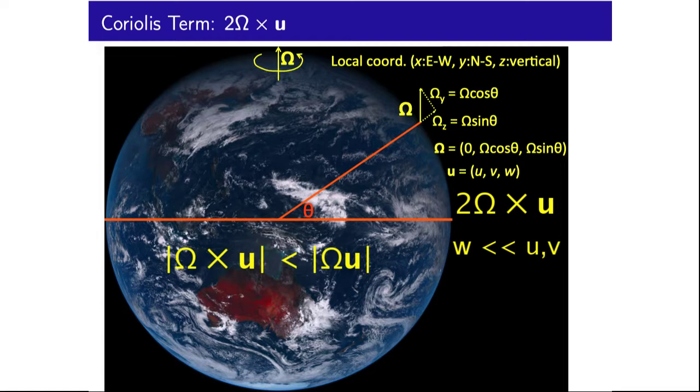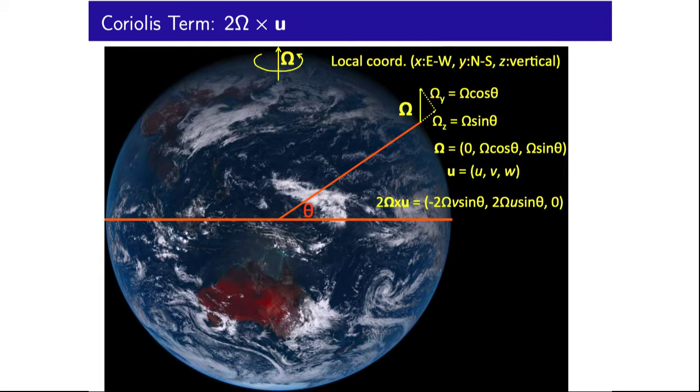Also, the magnitude of the cross term is at most omega times the local velocity. Omega for Earth is 7.3 times 10 to the negative 5, and the local geophysical velocities might be around 1 meter per second, which gives the vertical component of omega cross u as being negligible compared to gravity, and thus we can ignore it.